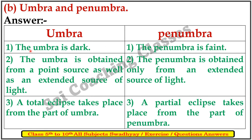The umbra is dark while the penumbra is faint. Umbra is obtained from a point source as well as an extended source of light, whereas penumbra is obtained only from an extended source of light. A total eclipse takes place from the part of the umbra, while a partial eclipse takes place from the part of the penumbra.